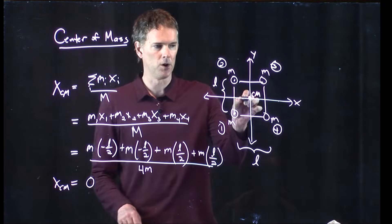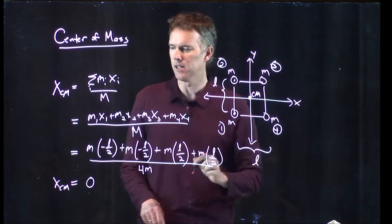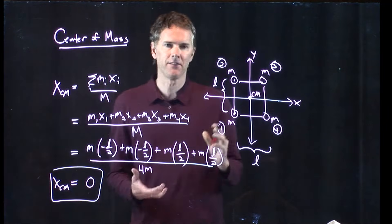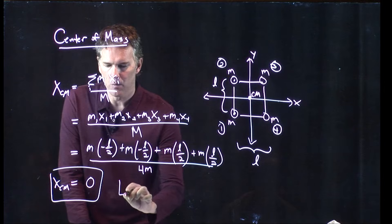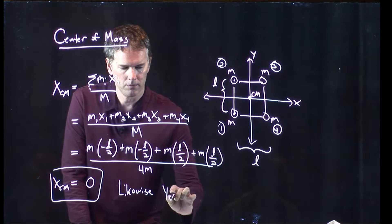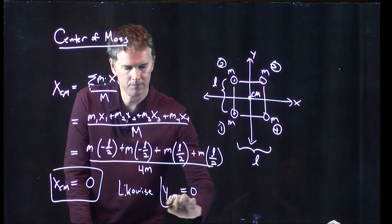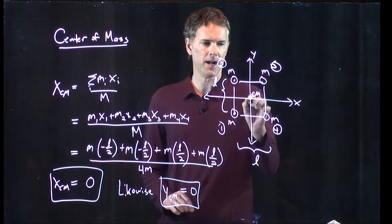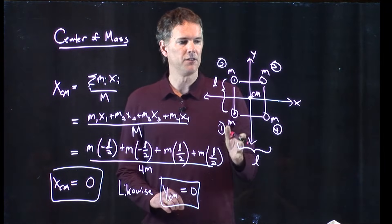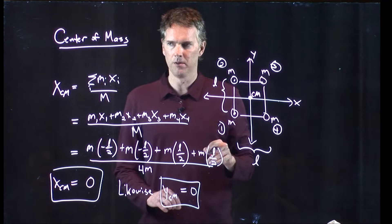And we get x cm is equal to 0. So, on our coordinate system, the x position of the center of mass is equal to 0. And by symmetry, you're going to get y cm also equal to 0. Okay? So, we were right. The center of mass is right in the middle of the system. And it is centered on our coordinate system that we drew.